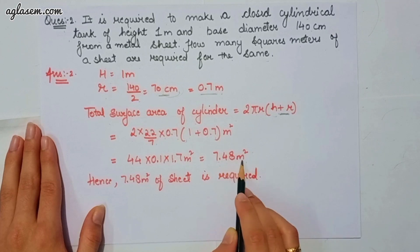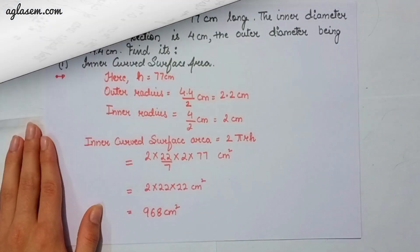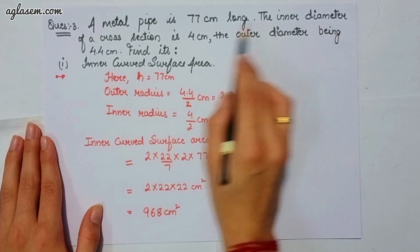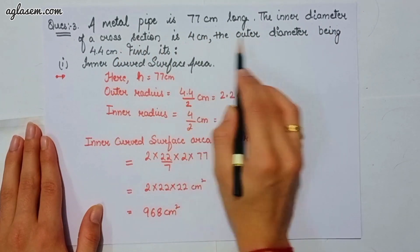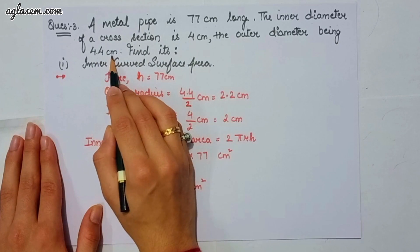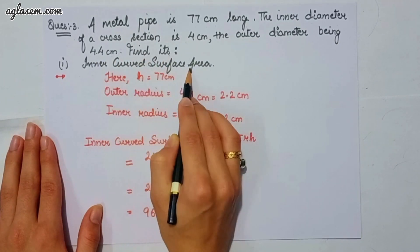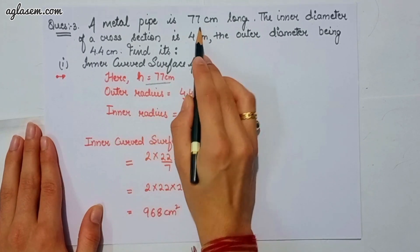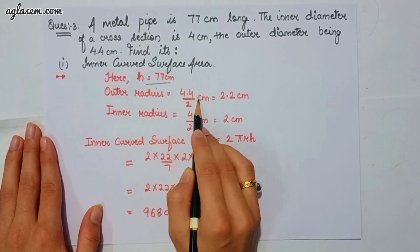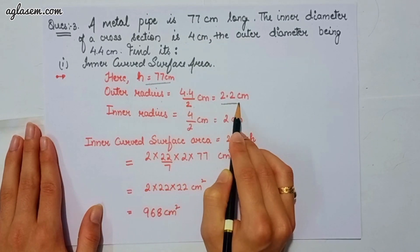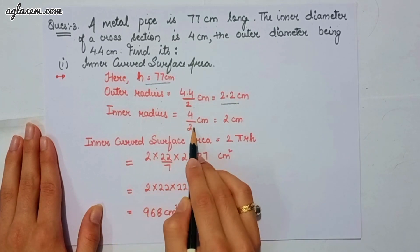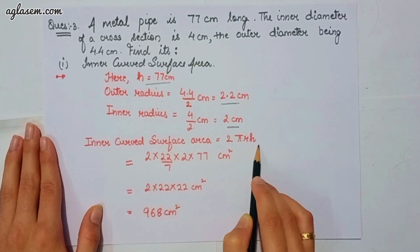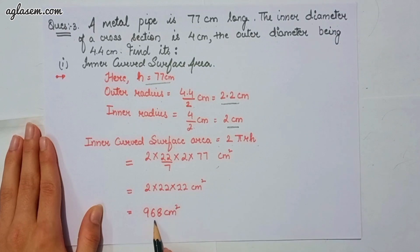Moving to our third question: a metal pipe is 77 cm long. The inner diameter of the cross-section is 4 cm and the outer diameter is 4.4 cm. For the first part, height = 77 cm, outer radius = 4.4 ÷ 2 = 2.2 cm, and inner radius = 4 ÷ 2 = 2 cm. Inner curved surface area = 2πrh = 968 cm².